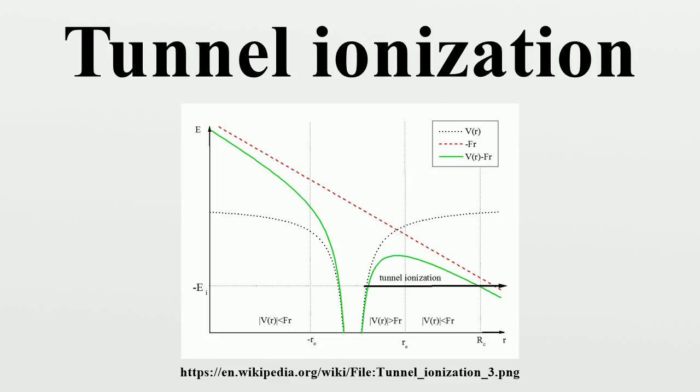AC electric field: The ionization rate of a hydrogen atom in an alternating electric field, like that of a laser, can be treated in the appropriate limit as the DC ionization rate averaged over a single period of the electric field's oscillation.